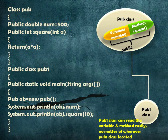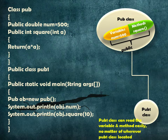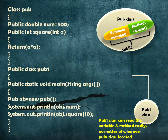Look at the program here. In the class 'pub', we have declared a 'num' variable as public and a 'square' method as public. We are accessing the num variable and square method in the 'pub1' class. The variable num and the square method are in the pub class, and pub1 class is able to access them because they are declared as public.